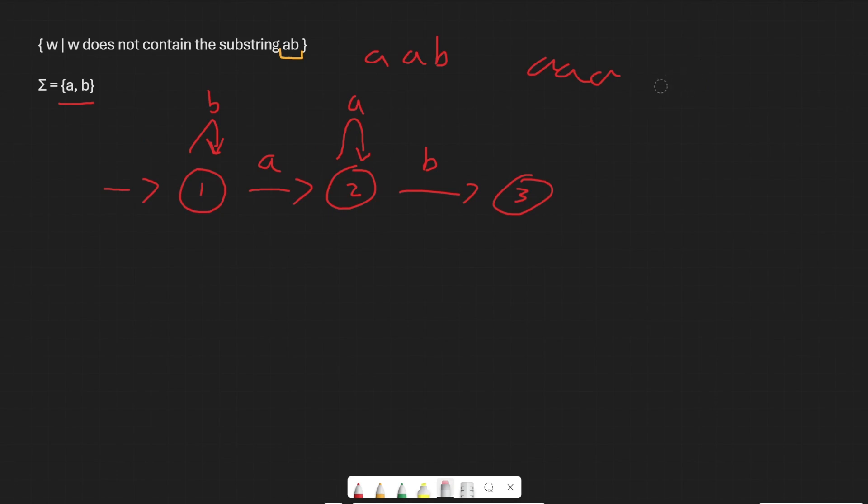Besides a and b, if we input another a, we can just keep doing that forever and ever. But the second we input the only other character in our alphabet, b, then boom, the condition's met. So we're just going to keep looping on a until we hit a b, then we go to state three.